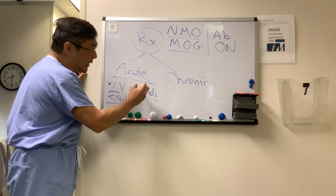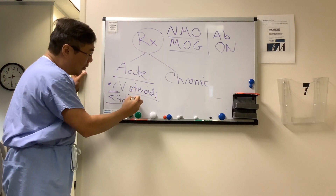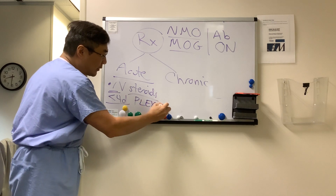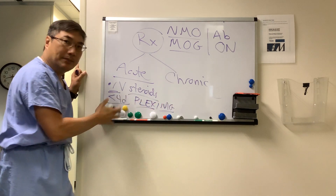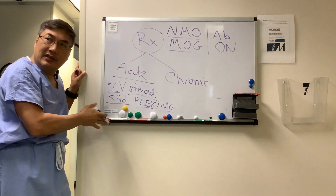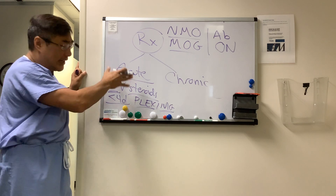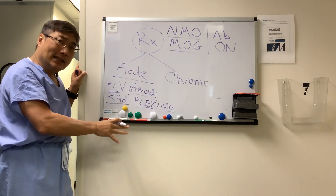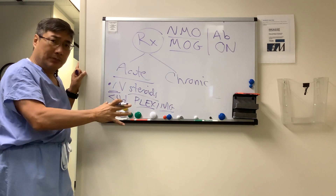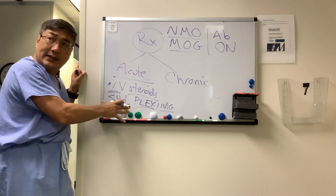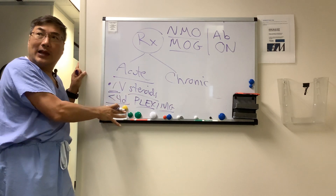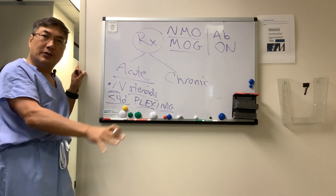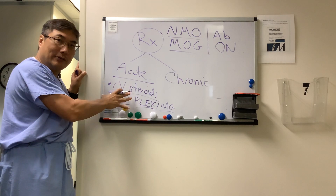If you think it's MOG or NMO, you might go to Plex or IVIG if the patient is not getting better by day three to five in the acute setting. That's because, unlike demyelinating optic neuritis from multiple sclerosis, if you don't treat this, they're going to be blind. Each single attack could lead to permanent disability.